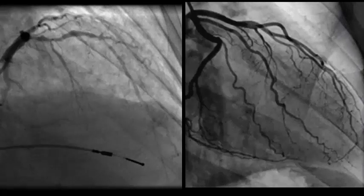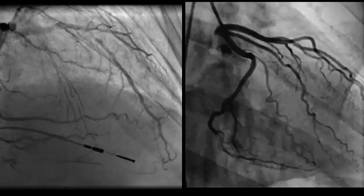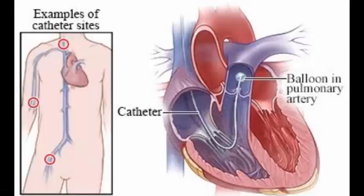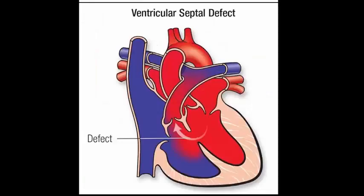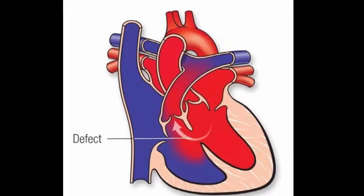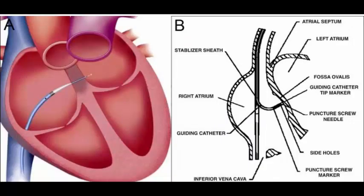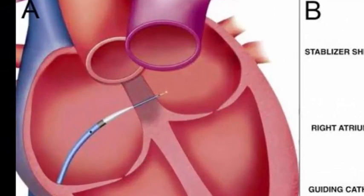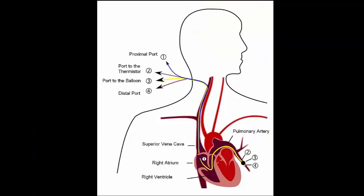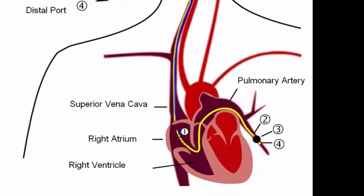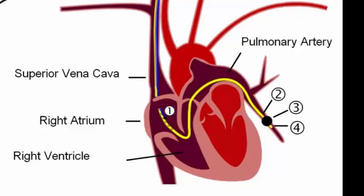Left heart catheterization can be completed as a day-case procedure and is relatively safe, with serious complications occurring in fewer than 1 in 1000 cases. Right heart catheterization assesses right heart and pulmonary artery pressures and detects intracardiac shunts by measuring oxygen saturations — for example, a step-up from 65% in the right atrium to 80% in the pulmonary artery is indicative of a large left-to-right shunt such as a ventricular septal defect. Cardiac output can be measured by thermodilution. Left atrial pressure can be estimated by wedging a balloon catheter in a branch of the pulmonary artery; Swan-Ganz catheters monitor pulmonary wedge pressure as a guide to left heart filling pressure in critically ill patients.